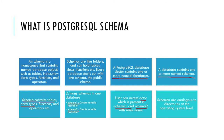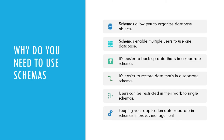A schema is synonymous to a directory or folder at the operating system level — nothing more than that. Inside that folder there will be different objects like tables, views, functions, etc. This is a brief introduction of a schema: it is simply a logical container which can have different tables, data types, and other objects.